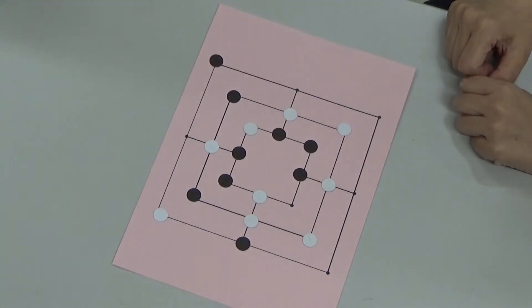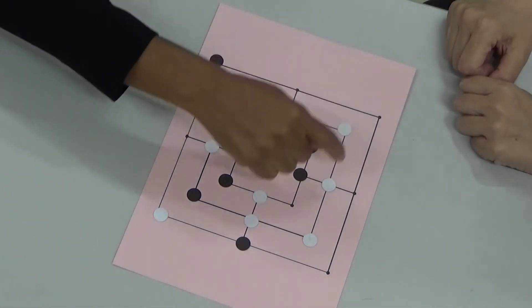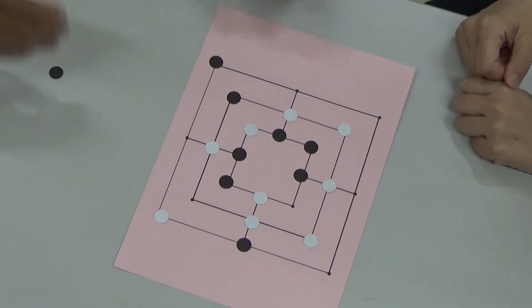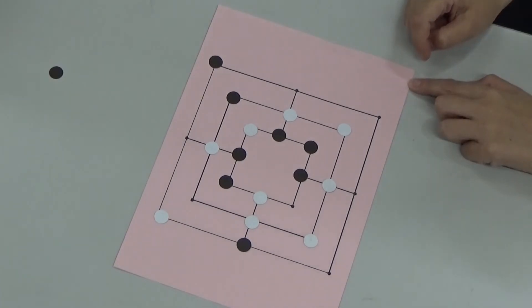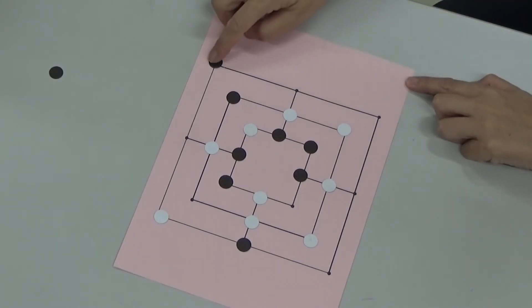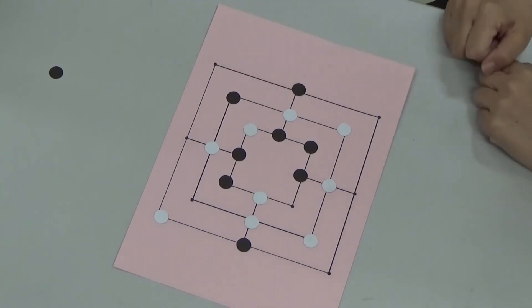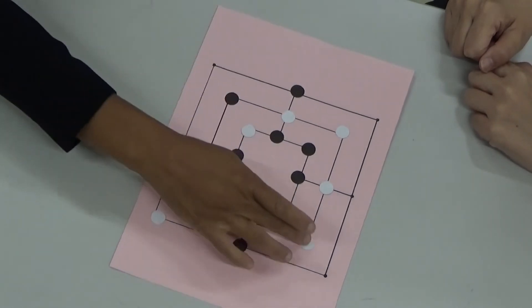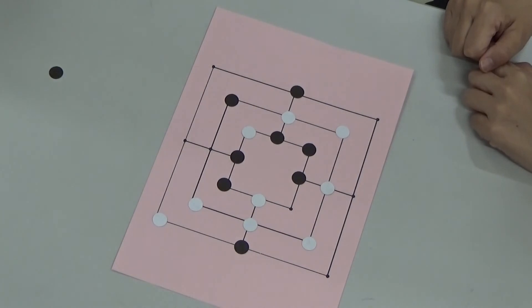And now white has made a row of three so they can take one of black's pieces. White has made another row. So they can take another one of black's pieces.